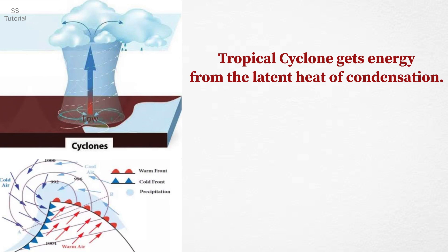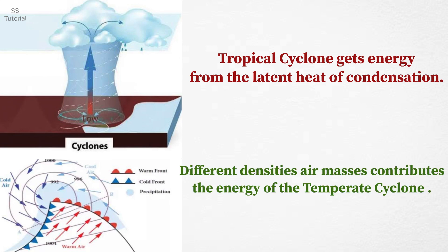Tropical cyclone gets energy from the latent heat of condensation. Whereas the differences in the densities of air masses contribute the energy of the temperate cyclones.